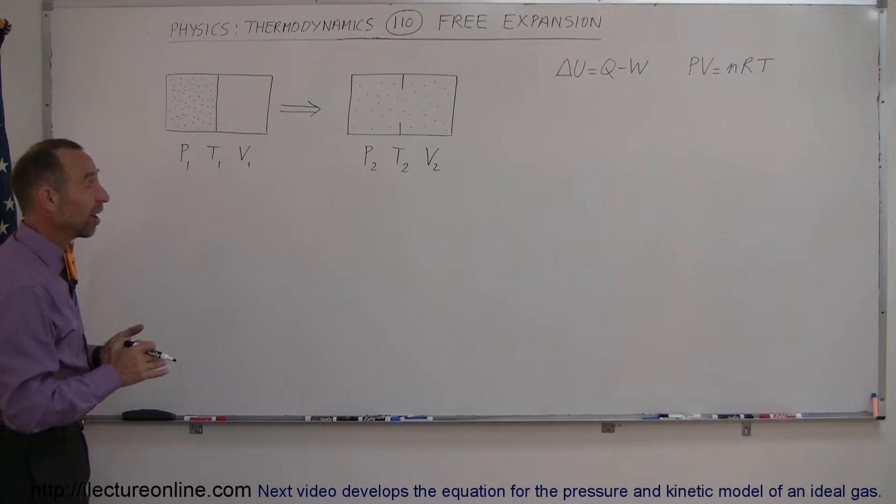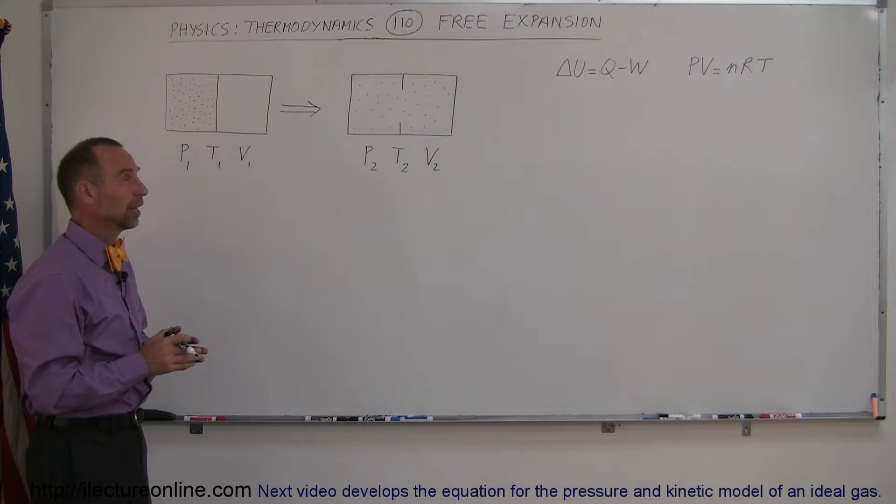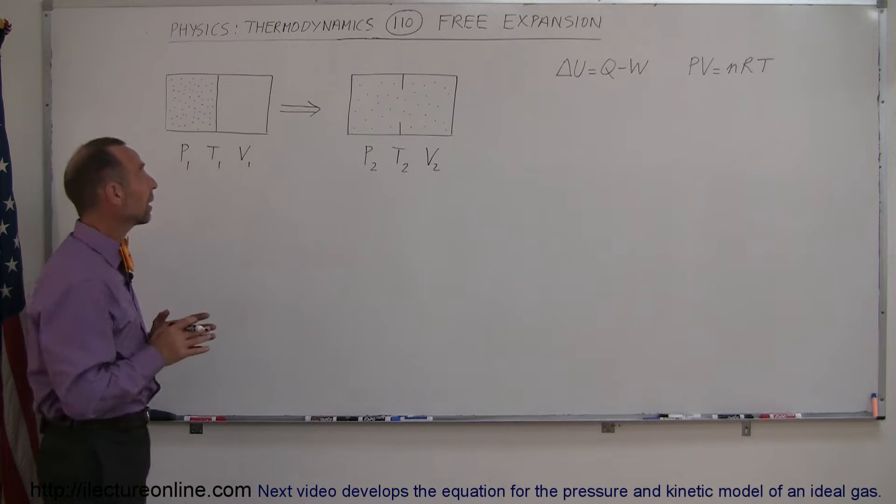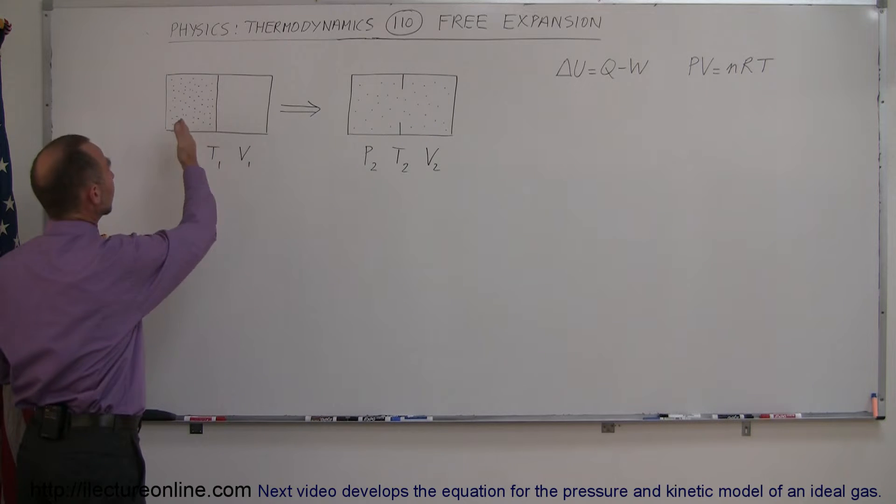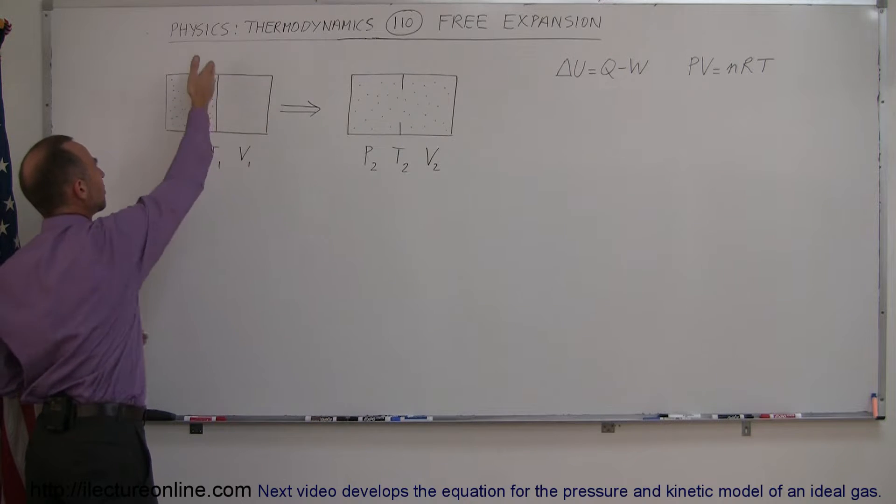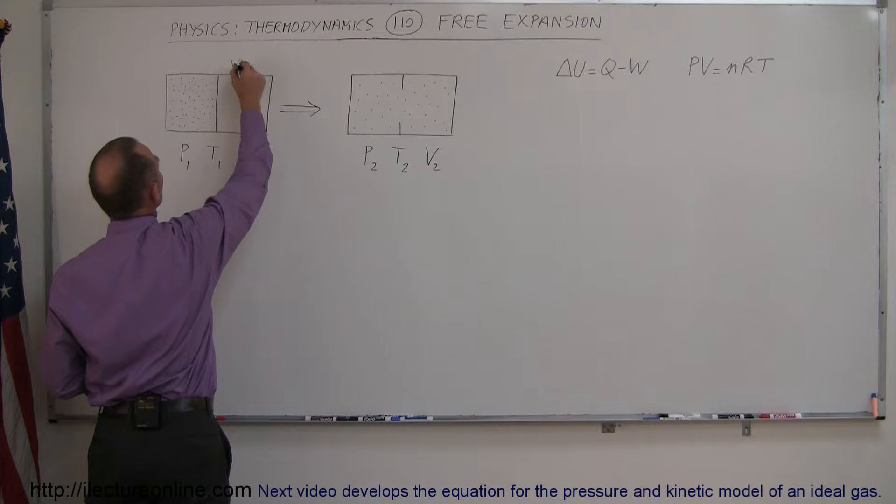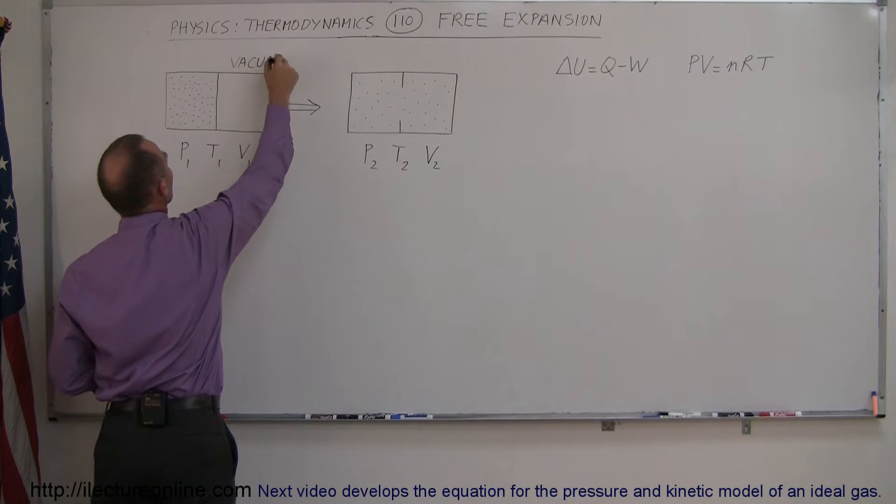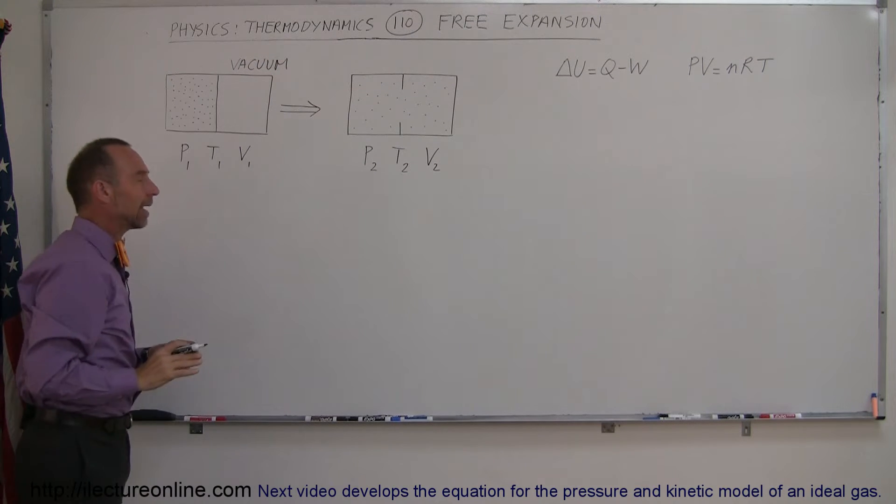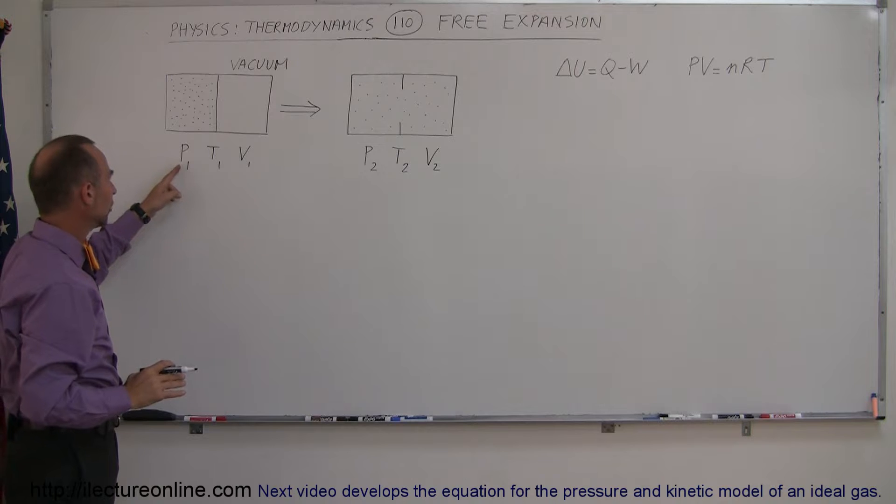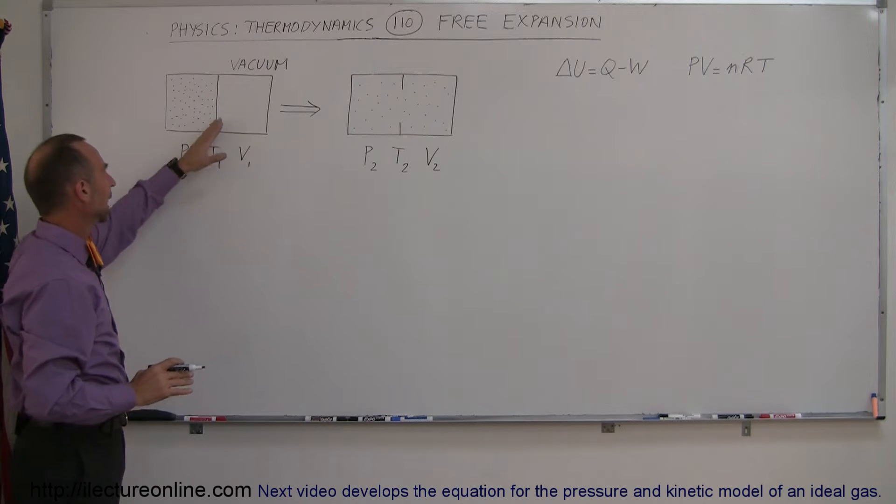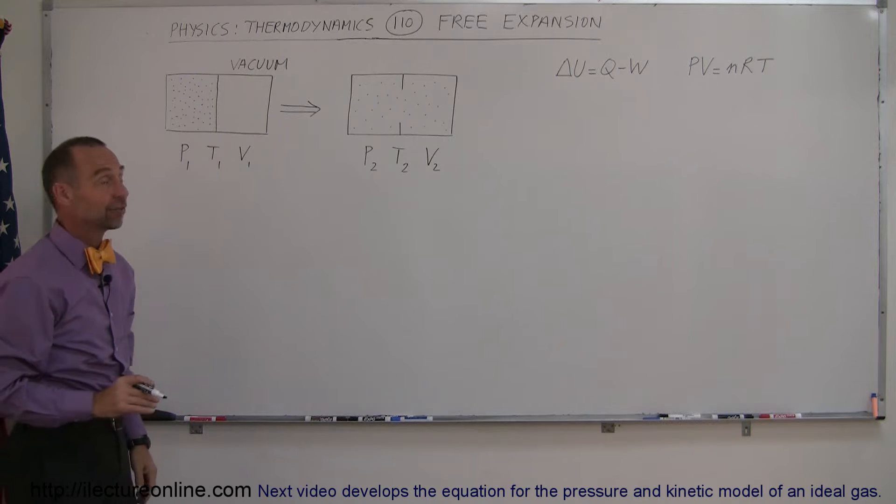Here's a topic in thermodynamics that is often very misunderstood. It's called the free expansion. The way that works is, let's say we have a big box right here with a membrane or something dividing the box into two halves. Let's say that on this side we have a vacuum, and on the other side we have gas at a particular pressure, at some temperature, and of course taking up the volume of half the box.